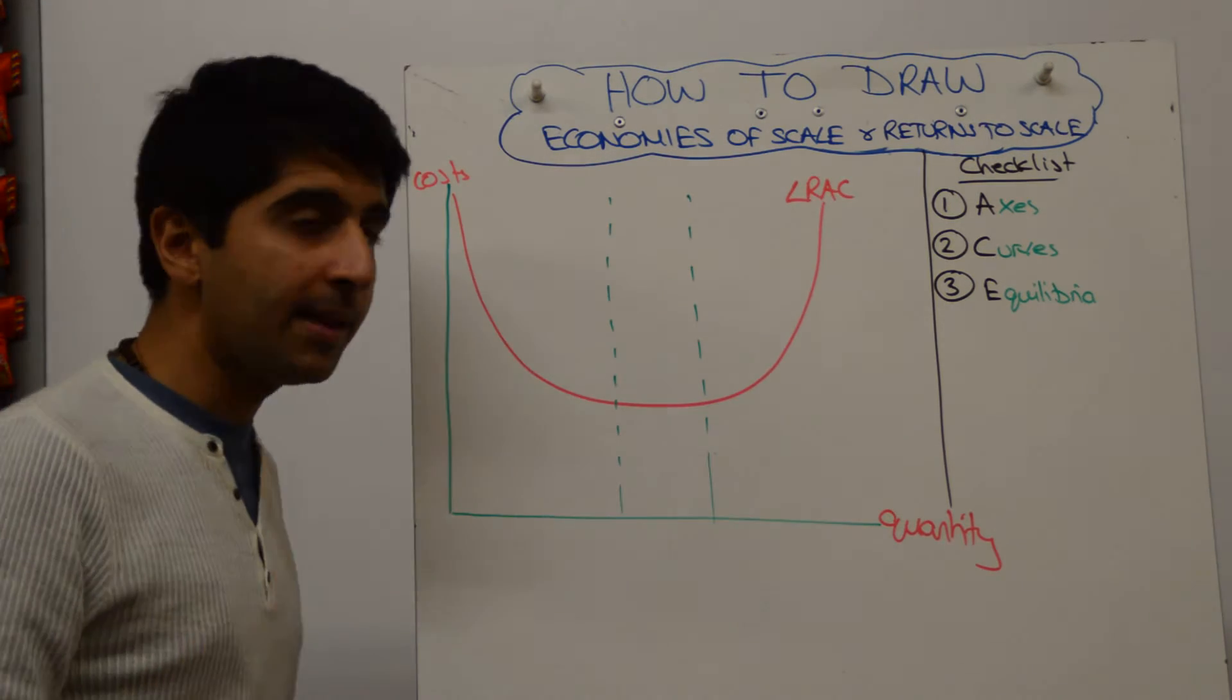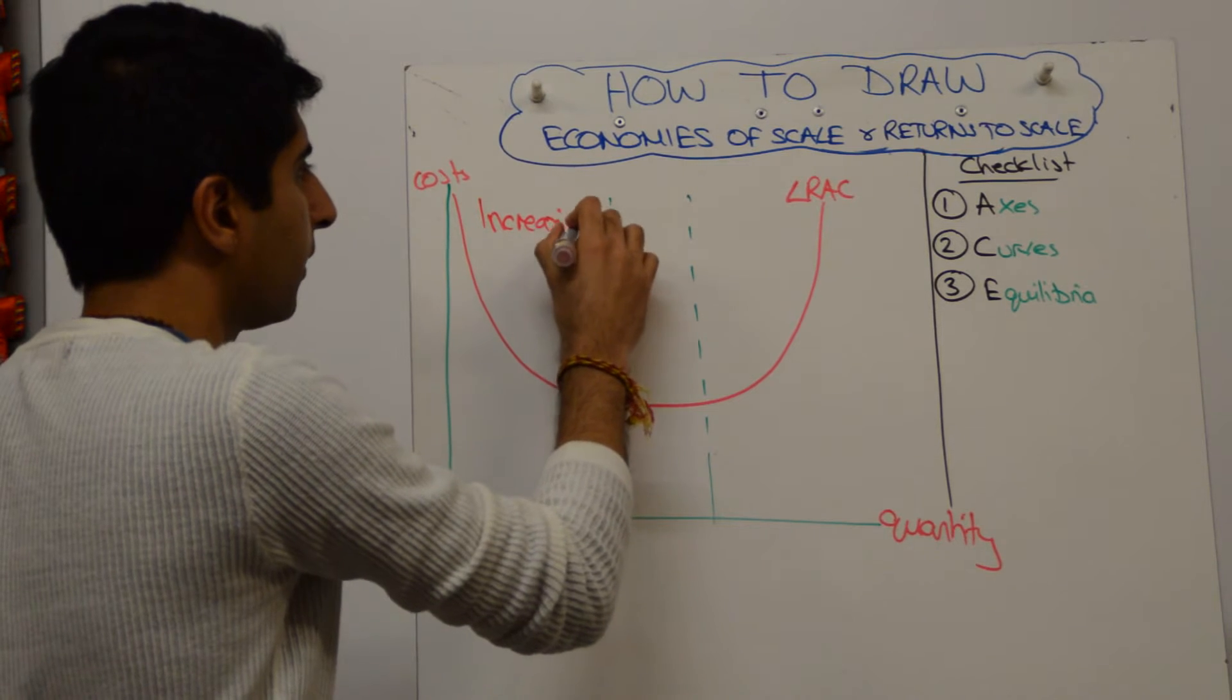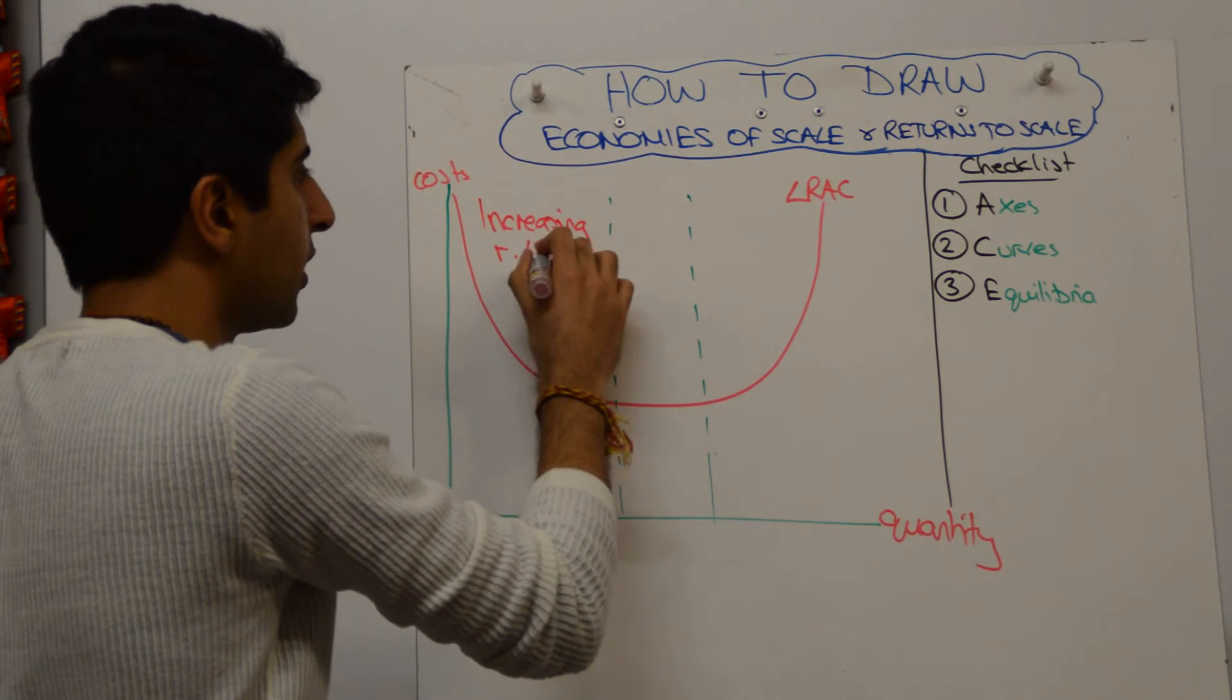So the left-hand section, you then label increasing returns to scale.